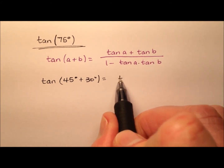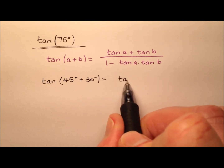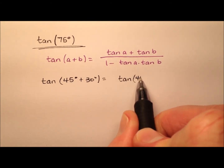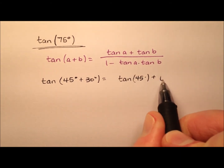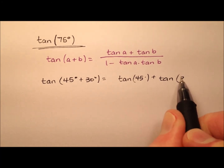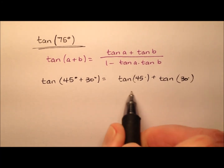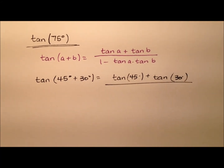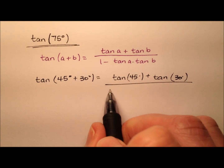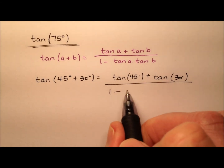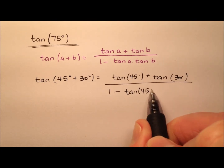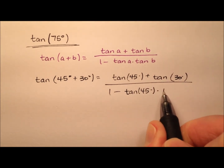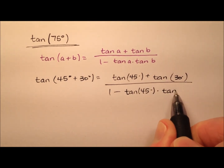So the tangent of A, which is that first angle 45 degrees, plus the tangent of B, that second angle 30 degrees. And then we're going to say one minus the product of those two — so tangent of 45 times tangent of 30.